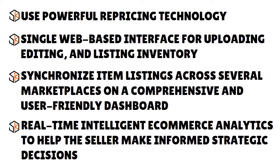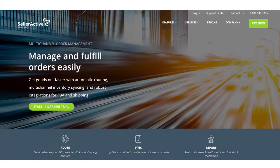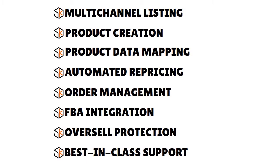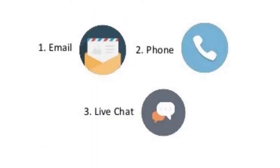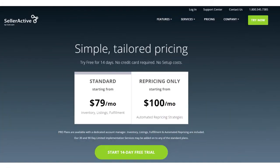Having access to the latest data is important for things like repricing — for example, if a competitor is selling an item cheaper than you, or if you need to change the meta description of a specific item. Seller Active benefits include multi-channel listing, product creation, product data mapping, automated repricing, algorithmic repricing for competitive and private label listings, order management, FBA integration, oversell protection, and best-in-class support via phone, email, and chat.